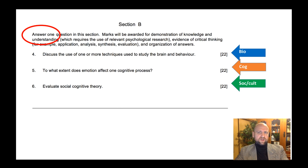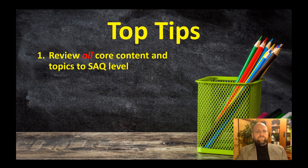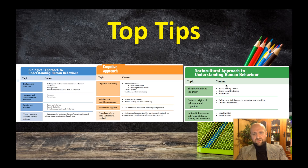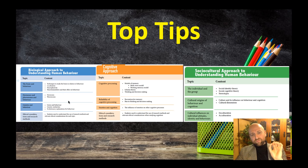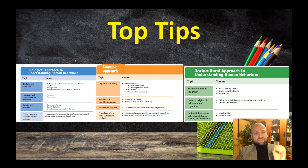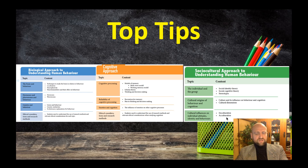Top tip: review all the core content to SAQ level. For all of these topics and content points, you must be able to explain a key concept. Sometimes the IB has made it clear what the key thing to explain is, and other times it's less clear. You must prepare for all of them because they are mandatory questions — you might get a question on acculturation that you have to answer, so you need a central argument and a study for each.